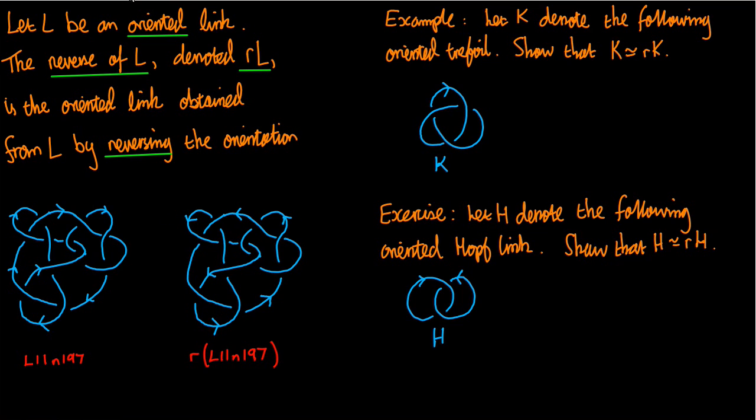So an example of a phenomenon that can happen quite frequently. Let K denote the following oriented trefoil. So K is going to be this very specific trefoil with the given orientation. Then the question is, show that K is equivalent to its reverse.